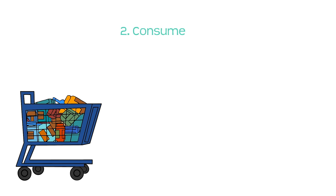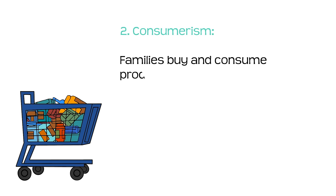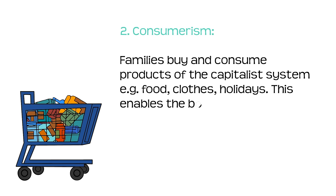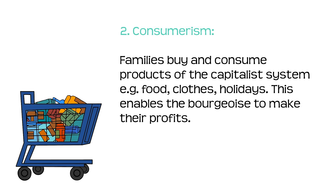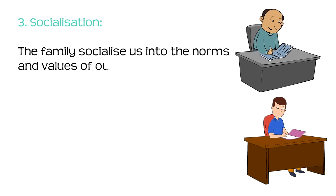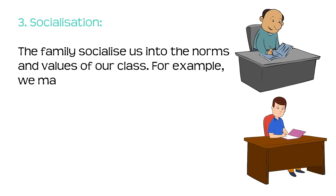Secondly, consumerism: families buy and consume products of the capitalist system, such as food, clothes and holidays. This enables the bourgeoisie to make their profits. Thirdly, socialisation: families socialise us into the norms and values of our class. For example, we may go into the same job as our parents.